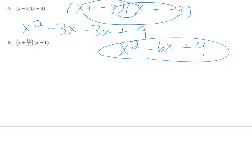I did that wrong, I apologize. I hope you caught it. That should be a 5, which means first is x squared, outer is negative 3x, inner is negative 5x, and last is plus 15. So this middle would be negative 3 minus 5 is negative 8x, and that would be plus 15.